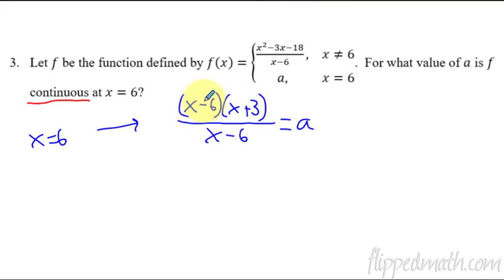So let's just start canceling stuff out here. That cancels. Now on my next line down, I'm going to write x plus 3. But instead of an x, I'm going to write 6. Now why 6? Because remember, we know that that's continuous right there when x equals 6. So 6 plus 3 has to equal my a.